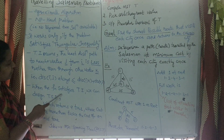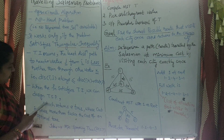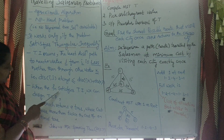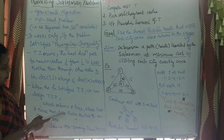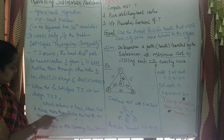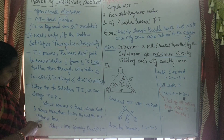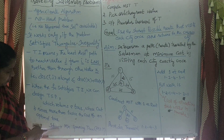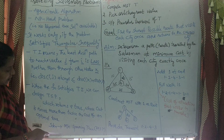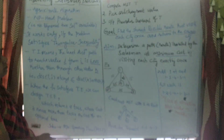When the function satisfies the triangular inequality, we can design the Travelling Salesman Problem solution. It returns a tour whose cost is never more than twice the cost of an optimal tour. Its main idea is constructing the minimum spanning tree.